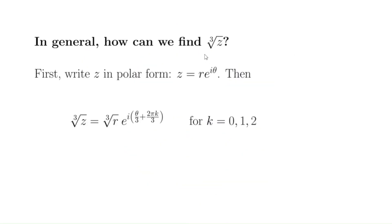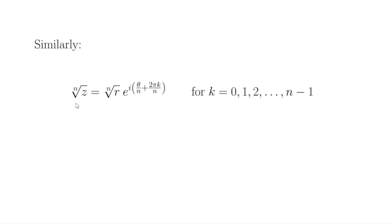In general, to find the cube root of z: first write z in polar form as r e to the i theta. Then the cube roots of z are the cube root of r times e to the i times (theta over 3 plus 2 pi k over 3), where k is 0, 1, or 2. Since 2 pi over 3 is 120 degrees, this corresponds to adding 0, 120, or 240 degrees. Similarly, there is a formula for the nth root of z, and you get n different nth roots of any nonzero complex number z.